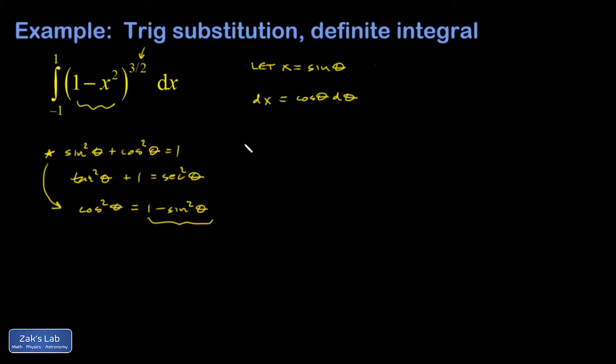And I also want to transform the limits of integration. When x equals negative 1, I have negative 1 equals sine theta. So I need the angle that gives me a sine equal to negative 1, and that's negative pi over 2.